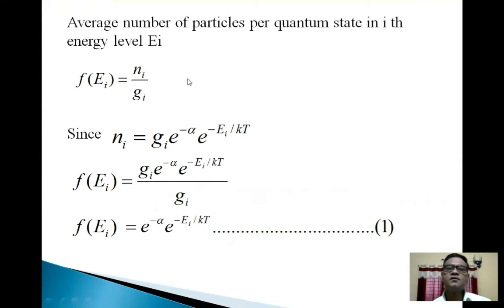This f(Ei) represents number of particles per quantum state. We are discussing this. So we know Ni = gi*e^(-α)*e^(-Ei/kT). So friends, put this value of Ni.